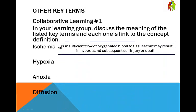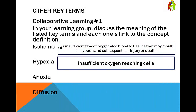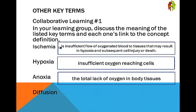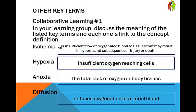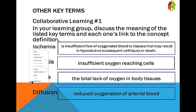Ischemia is insufficient flow of oxygenated blood to tissues that may result in hypoxia and subsequent cell injury or death. Hypoxia is insufficient oxygen reaching cells, whereas anoxia is the total lack of oxygen in body tissues.